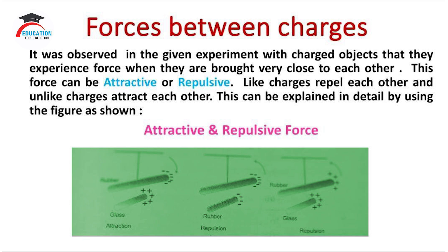Similarly, in the second stage, the rubber rod is carrying a negative charge and the glass rod, instead of a positive charge, is now also carrying a negative charge. In this case, if we bring both the rubber rod and the glass rod together, it will create a kind of force that is called repulsive force — in other words, a repulsive force develops.